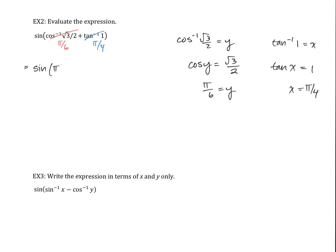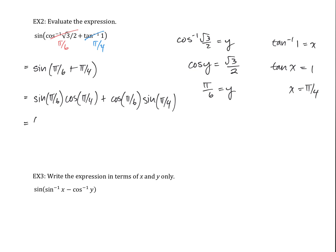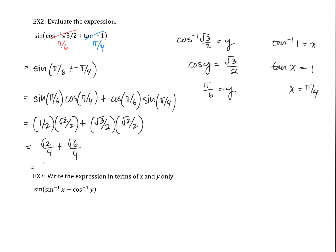So this simplifies to sine of pi over 6 plus pi over 4. Applying the sine addition formula: sine of pi over 6 times cosine of pi over 4, plus cosine of pi over 6 times sine of pi over 4. Sine of pi over 6 is one half, cosine of pi over 4 is root 2 over 2, cosine of pi over 6 is root 3 over 2, sine of pi over 4 is root 2 over 2. Multiplying out gives root 2 over 4 plus root 6 over 4, which equals root 2 plus root 6 over 4.